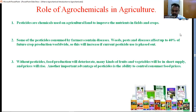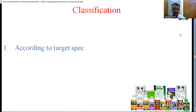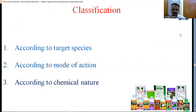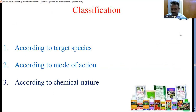Moving towards the classification. In classification, pesticides are classified on the basis of three aspects: according to target species, according to their mode of action, and according to chemical nature. According to target species means what the chemical contains and what it acts on. According to mode of action: stomach, contact, fumigation — these are the types. And according to chemical nature, activity is provided on the actual basis of their spreading ability. Let us see one by one.